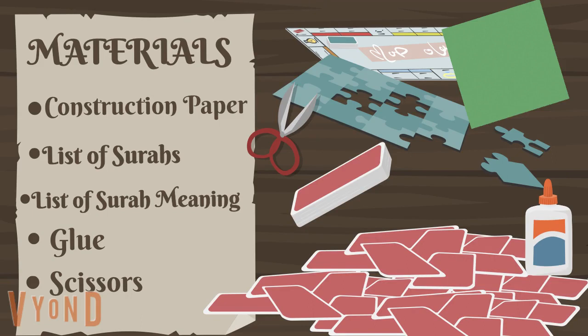To make this game, here are the materials required: two colors of construction paper, a list of surahs and a list of surah meanings, glue, and scissors.